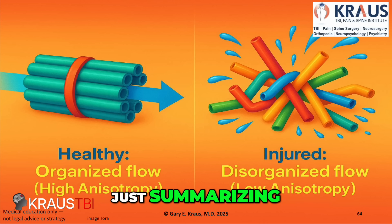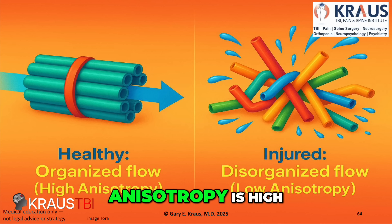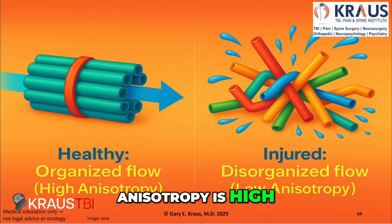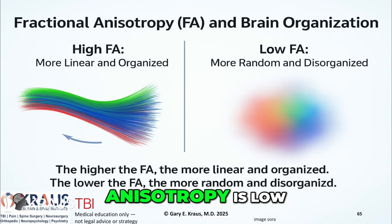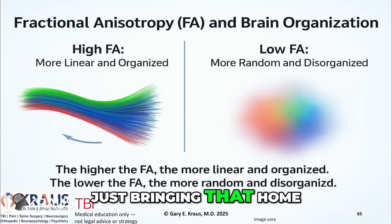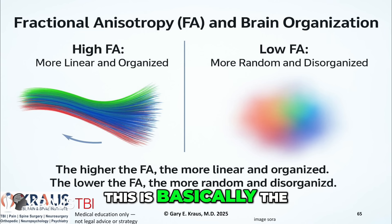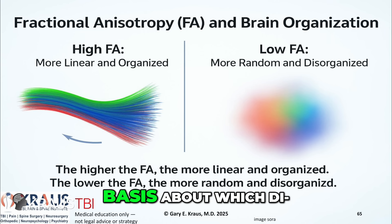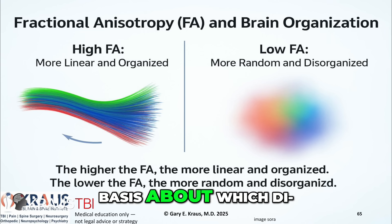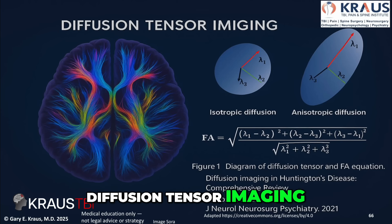Just summarizing: healthy, organized tubes — anisotropy is high. Injured, disorganized — anisotropy is low. This is an important point, because this is basically the basis upon which diffusion tensor imaging works.